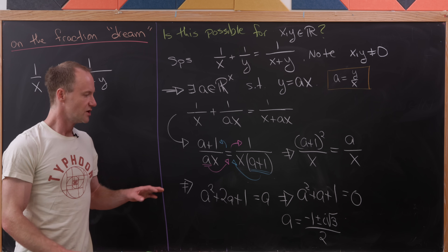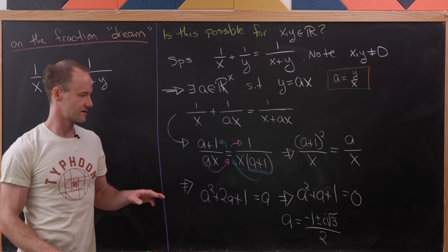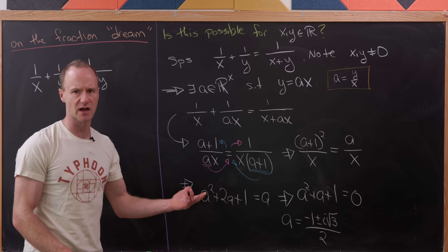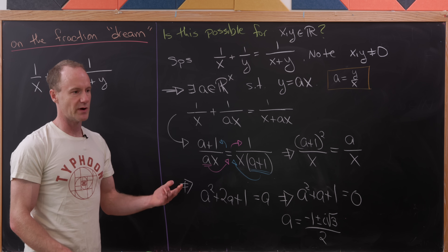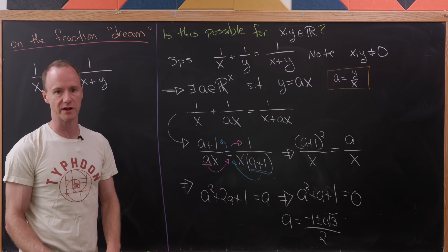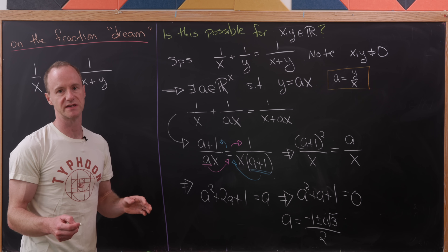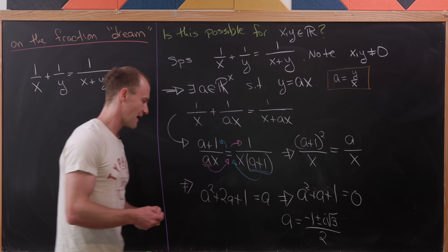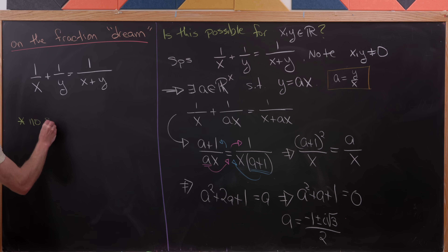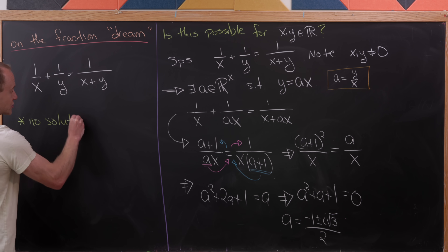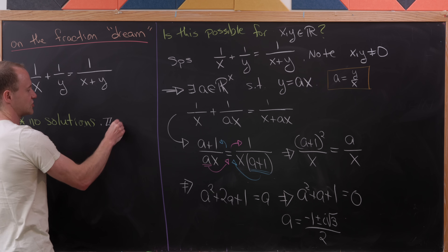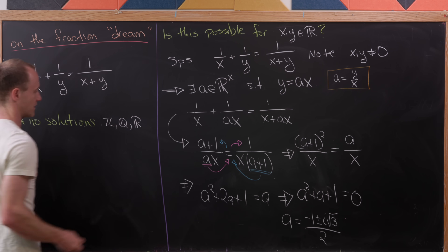The value of a we need is not a real number — it's complex. The scaling number needed to relate x and y is this complex number a. Since a is complex, there are no solutions in the real numbers, and therefore no solutions in subsets of the real numbers, such as the rational numbers or the integers.